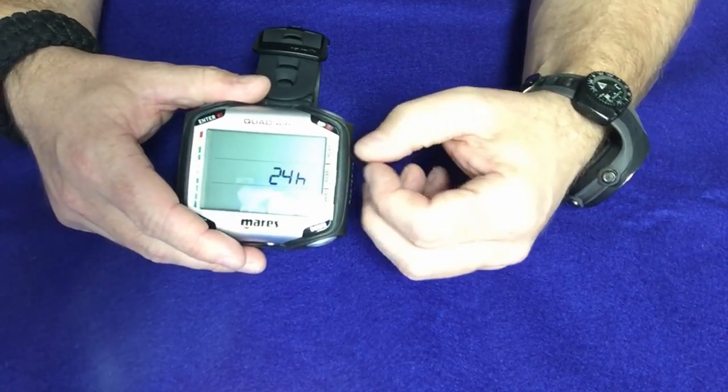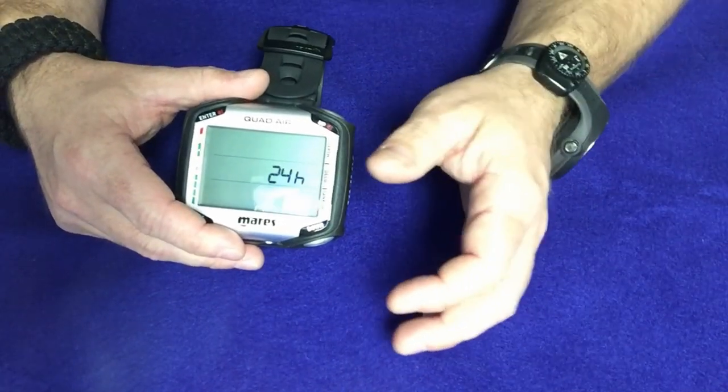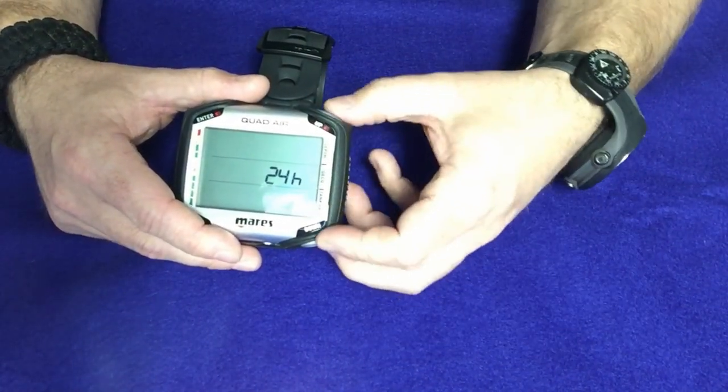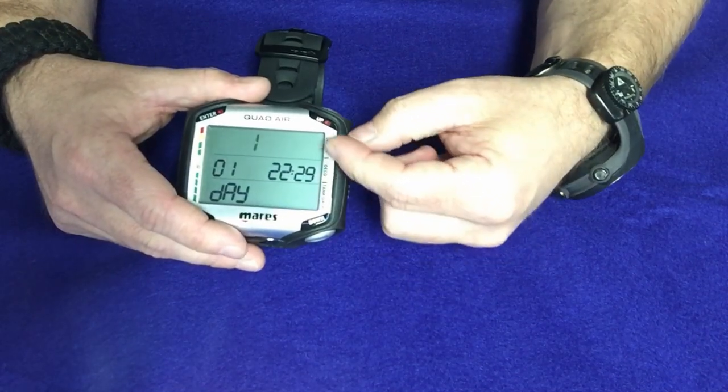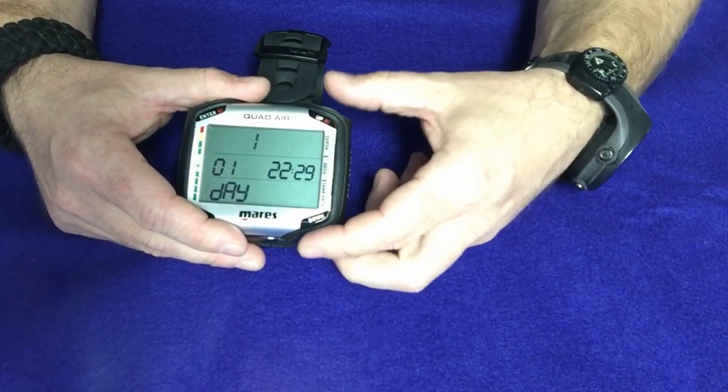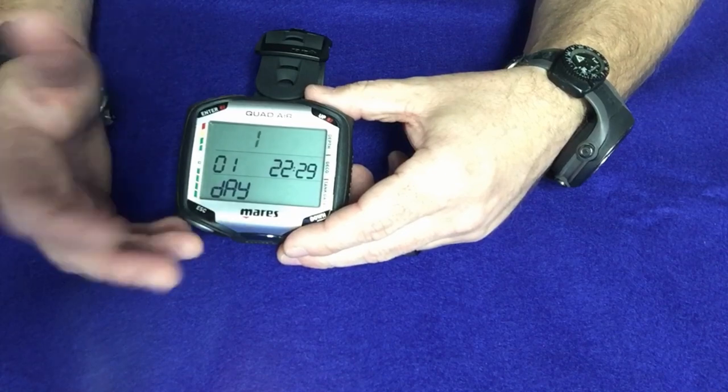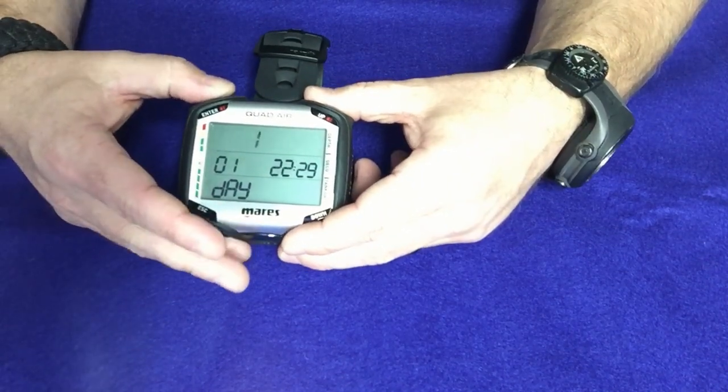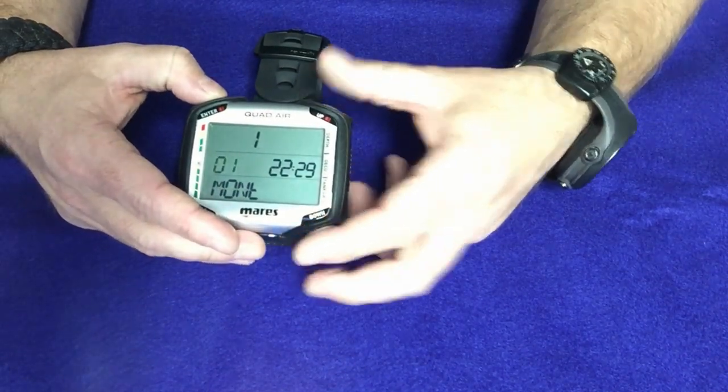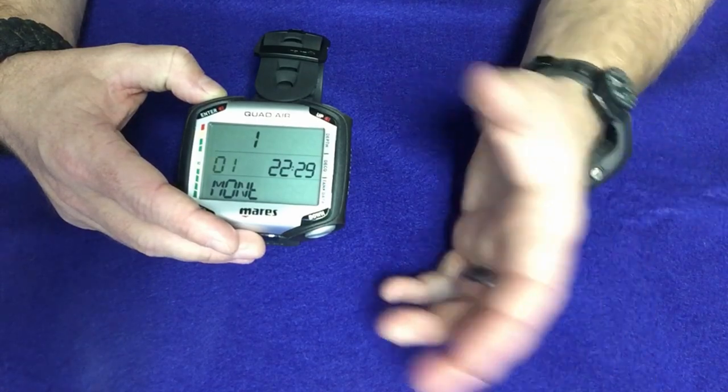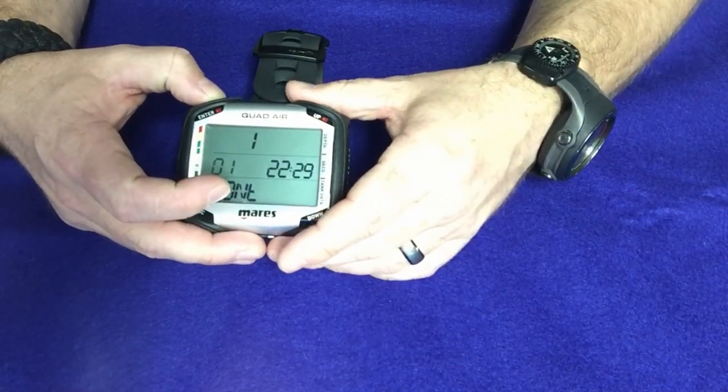Now to set this, you're either going to pick 12 or 24 hour time. Me personally, I like 24 hour time. So I'm going to leave it there. I can actually go in and I can change the day. So of course, today is January 1st. So we're going to leave that. I can change the month. Of course, today is January 1st. So I'm going to leave the month of January as well.